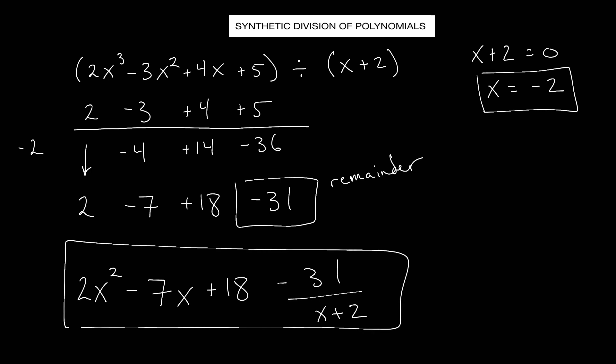Here we have exponent cubed, so this is going to be 2x squared. We have 2x squared minus 7x — because we had x squared, subtracting 1 gives us just x. Here we had x, now we have just a constant: positive 18. And then the remainder is negative 31 divided by x plus 2. So our answer is 2x squared minus 7x plus 18 minus 31 over x plus 2.